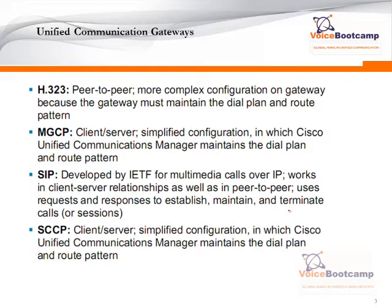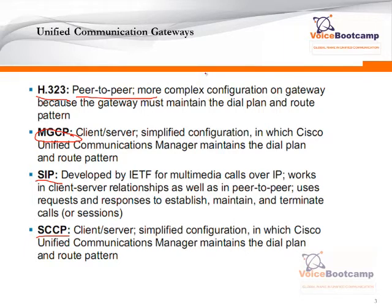In Unified Communication Gateway, you have four types of protocols used for signaling purposes or acting as a gateway protocol between the router and the Call Manager. The types of protocols are H.323, MGCP, SIP, and Skinny. H.323 is a peer-to-peer protocol, which has very complex configuration and allows you to maintain a separate dial plan on the Call Manager as well as on the router.